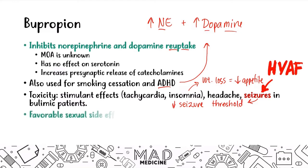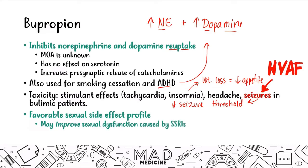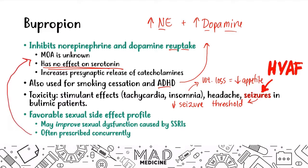One favorable side effect of bupropion is that it can improve sexual dysfunction caused by SSRIs. You can give bupropion with an SSRI because bupropion has no effect on serotonin, so you're not increasing the risk of serotonin syndrome. However, you don't want to give it with an SNRI, because SNRIs already inhibit norepinephrine reuptake and you don't want excessively high norepinephrine levels. With an SSRI it's okay; with an SNRI, it is not.